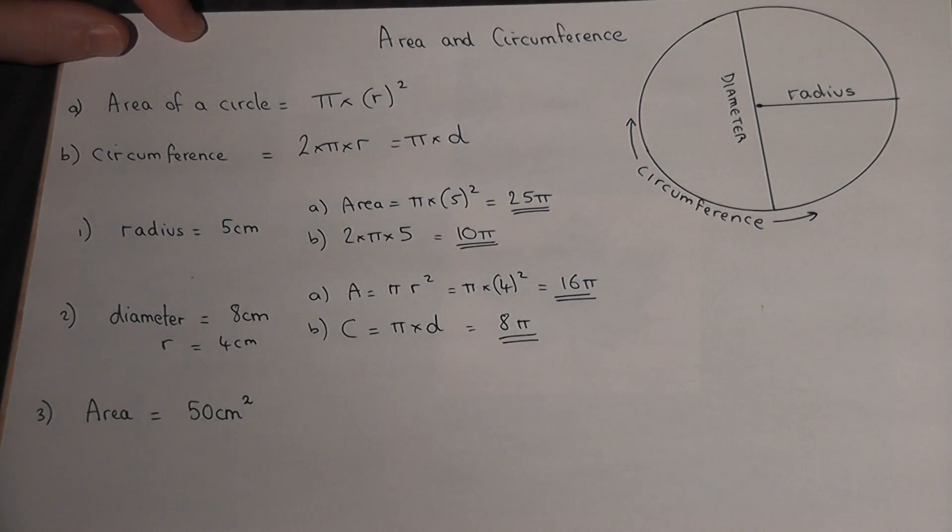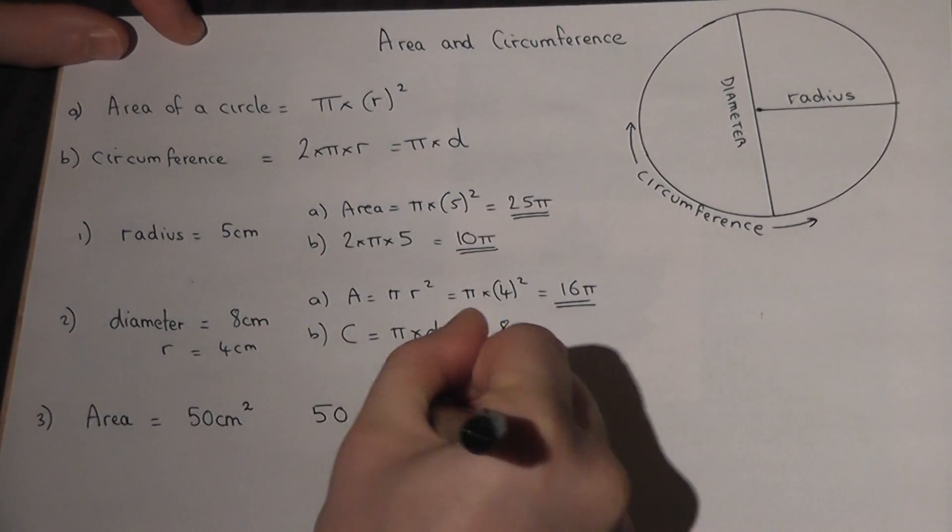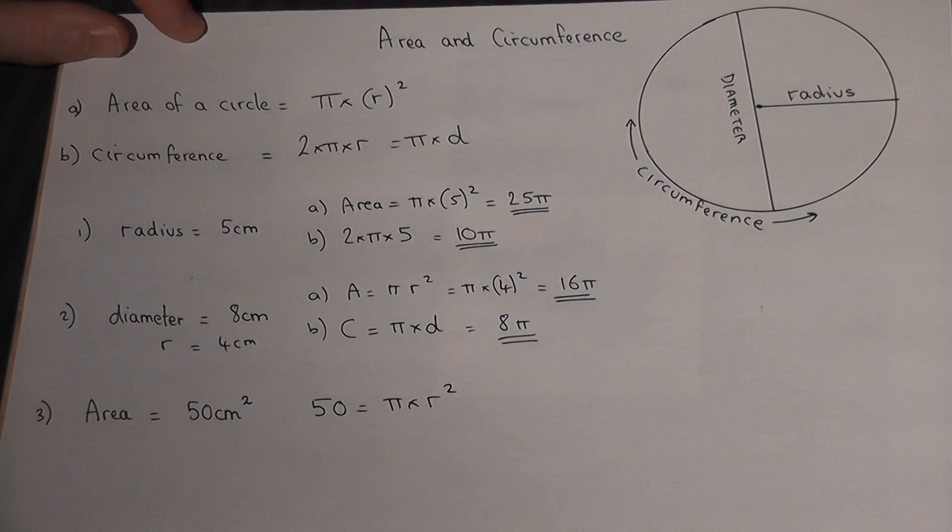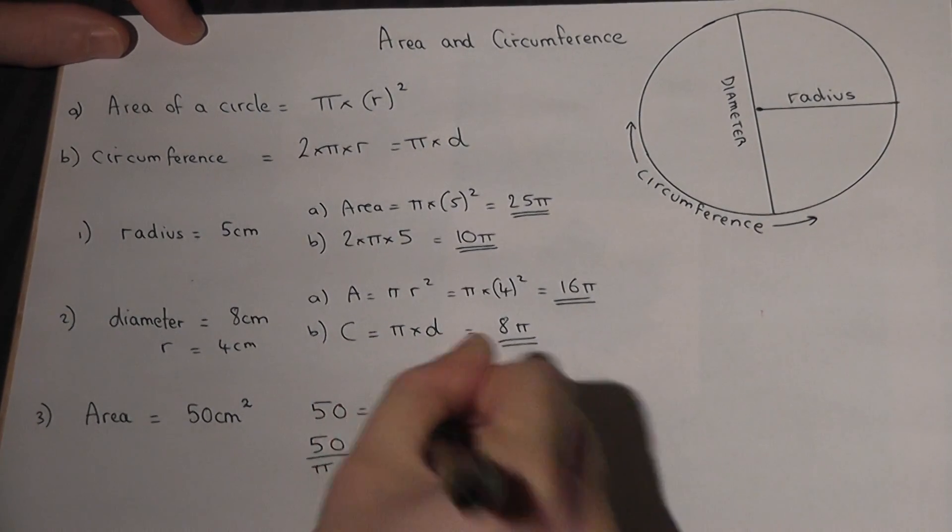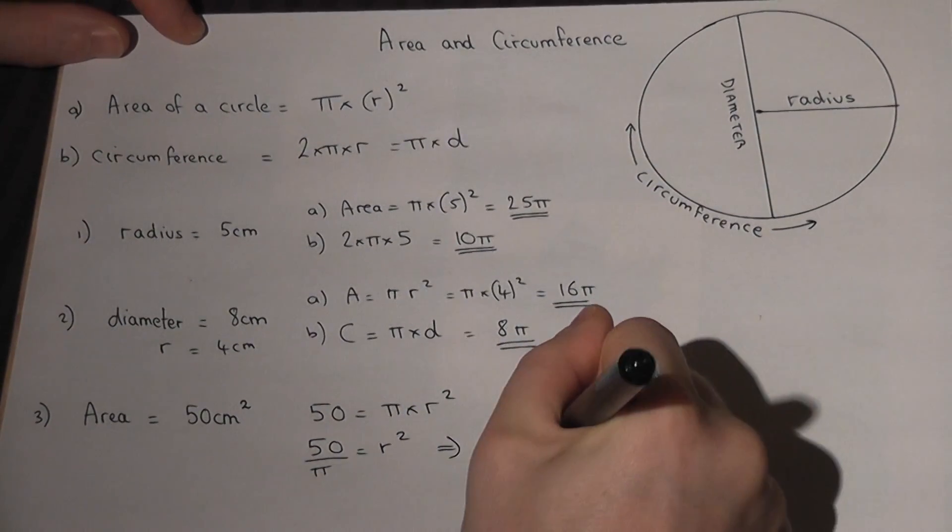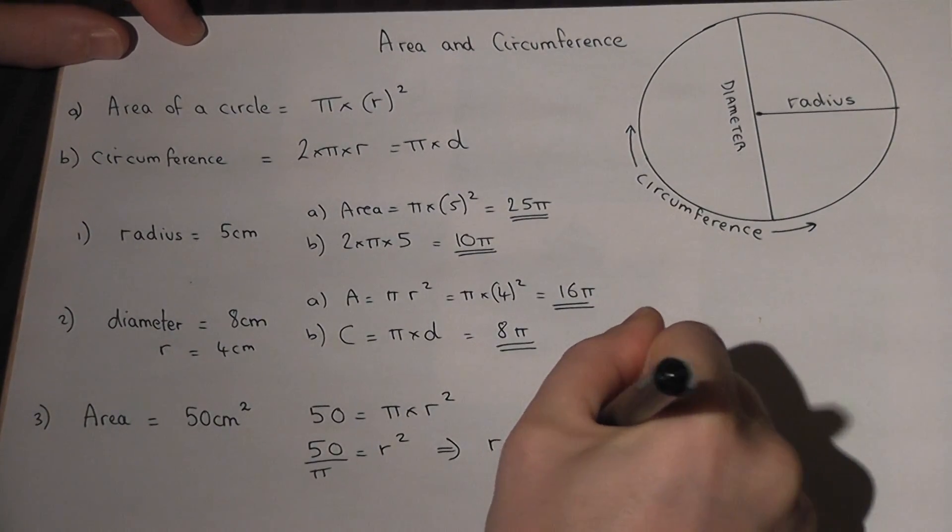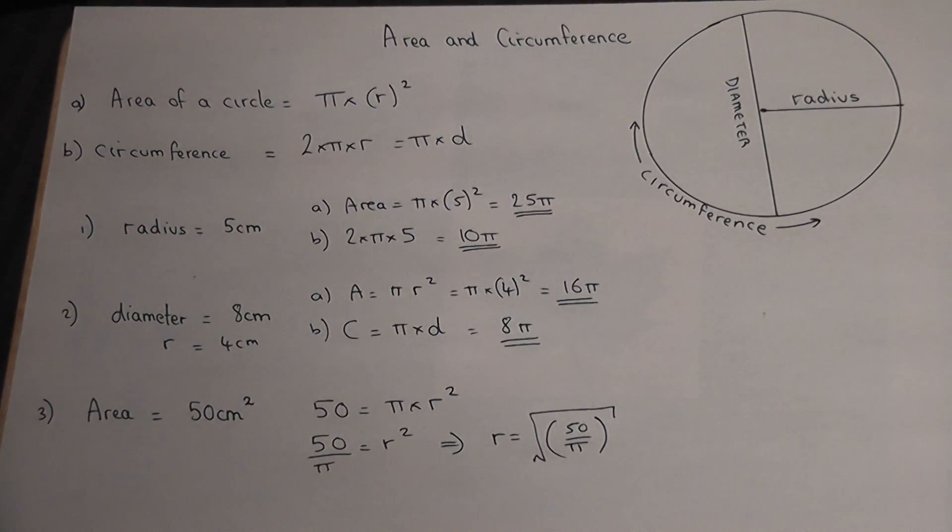Finally, for a slightly harder question, suppose you're given the area and you want to find the radius. The area, which is 50cm², must equal π times radius squared. If we divide by π, 50 over π must equal radius squared. So the radius must equal the square root of 50 over π, which you could work out on a calculator as a decimal.